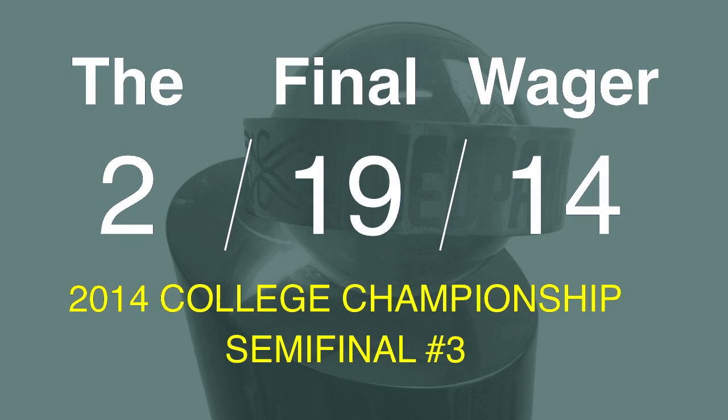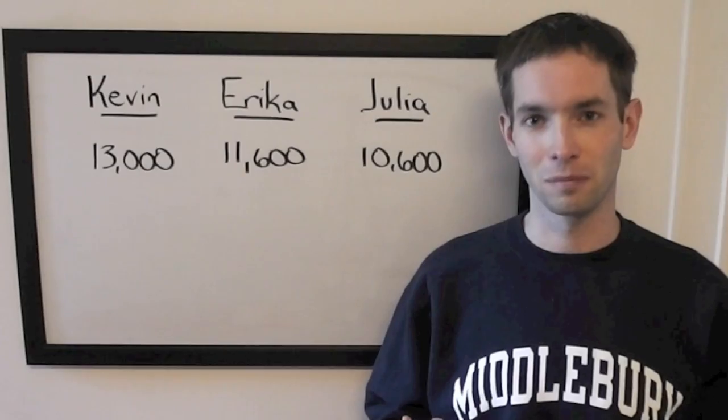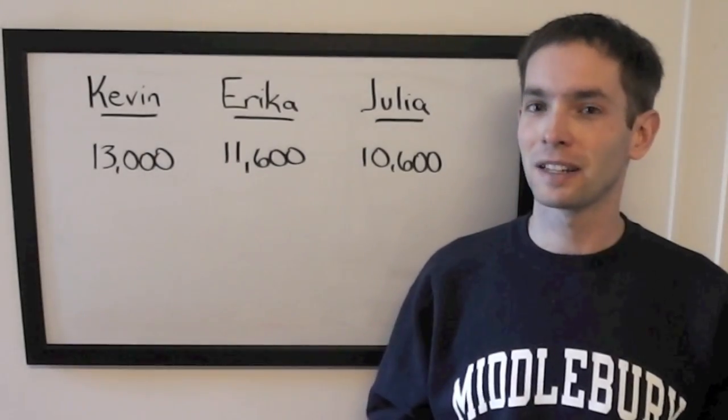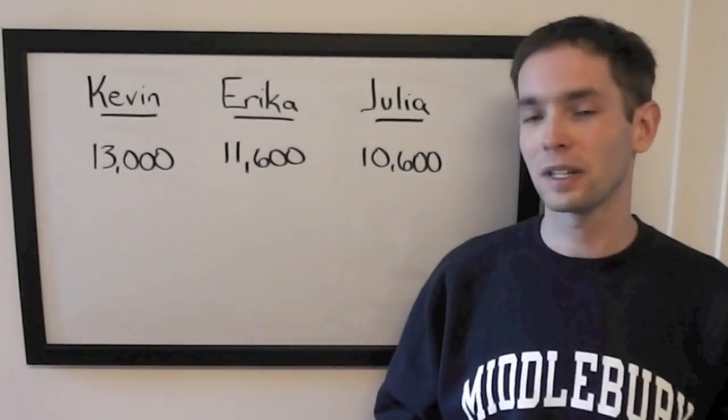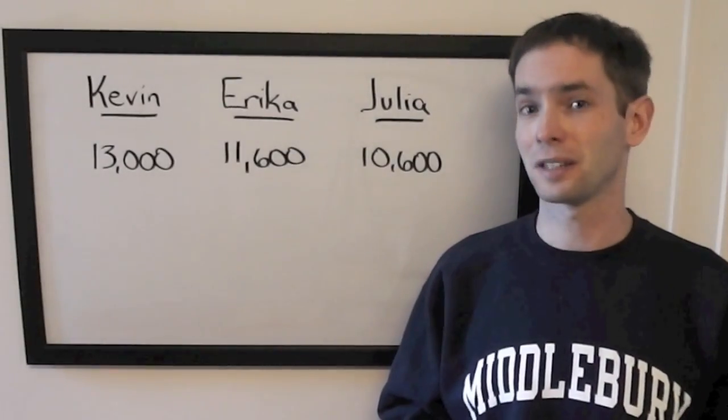Welcome to the final wager for this third and concluding semifinal match featuring Erica Sloan of Middlebury College. She's in second heading into final, trailing Kevin of Berkeley by $1,400. Julia of Harvard is the other side of this sandwich with $10,600.